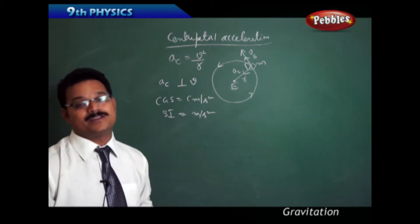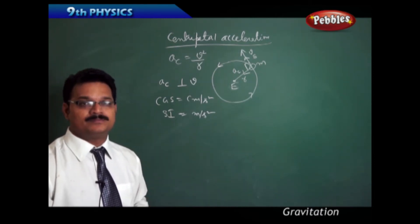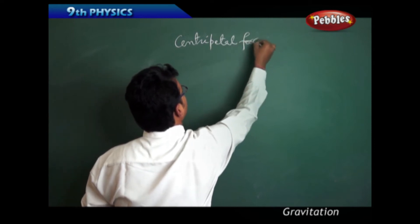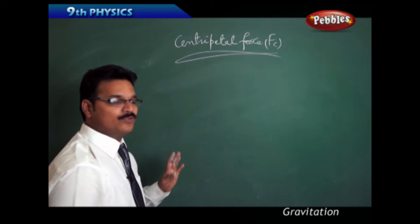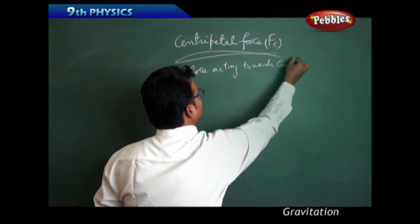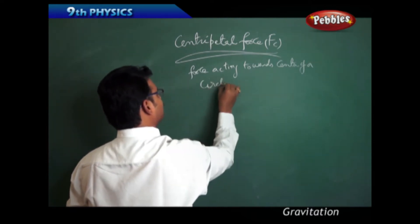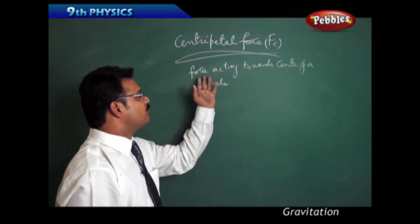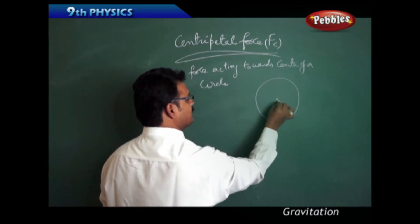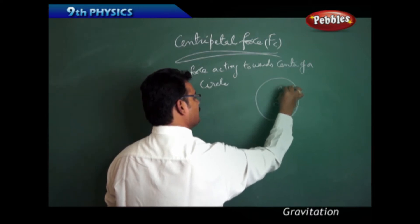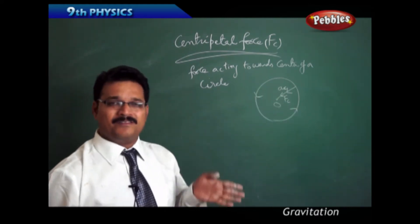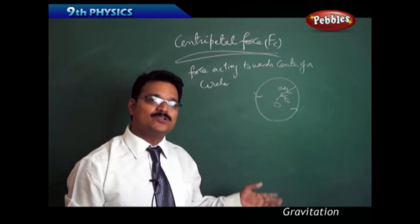From centripetal acceleration, we can derive another important physical quantity called centripetal force. Centripetal force is the force acting towards the center of a circle — just as acceleration acts towards the center, this force also acts towards the center. The reason is simple: whichever side the acceleration acts, the force acts on that same side, according to Newton's second law, F equals MA.